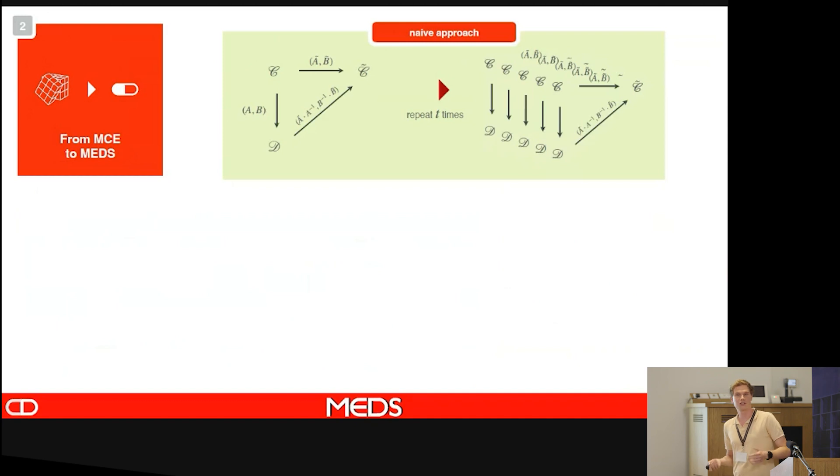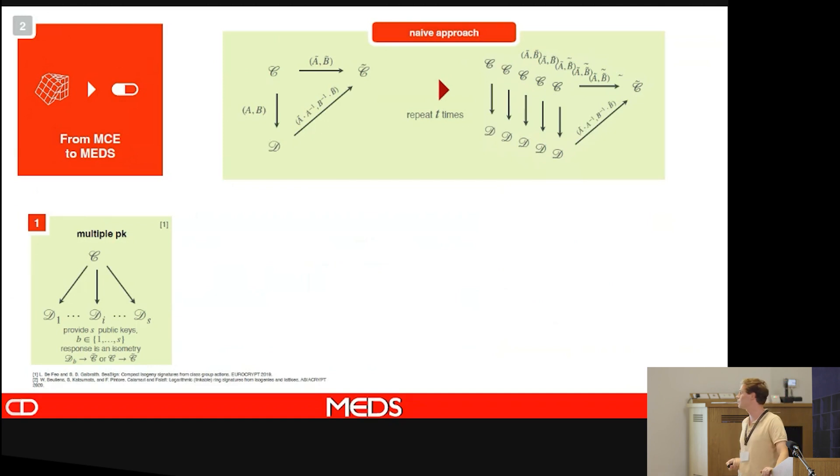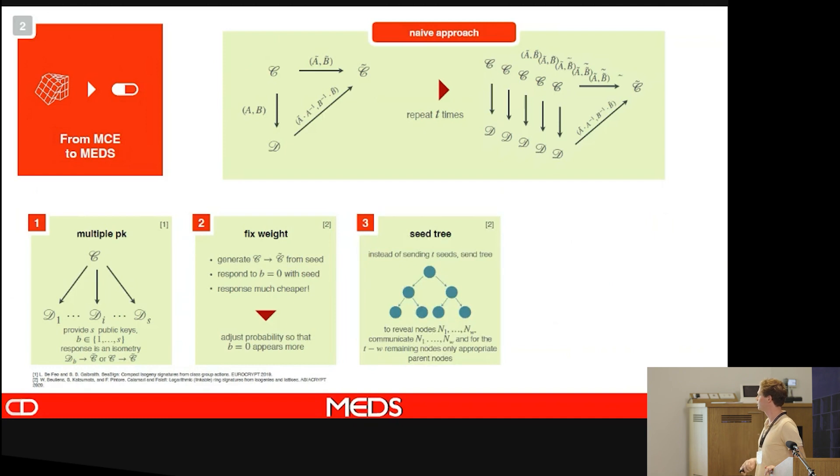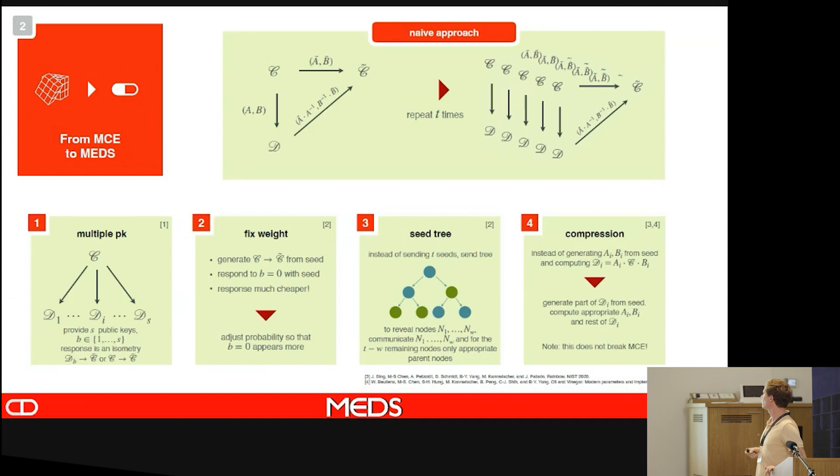How do we improve the soundness? This is by doing more in parallel. This is a good need. So we apply the tricks that we've seen before: multiple PKs, a fixed weight for challenge zero because we can send the seeds, and indeed, using a seed tree.